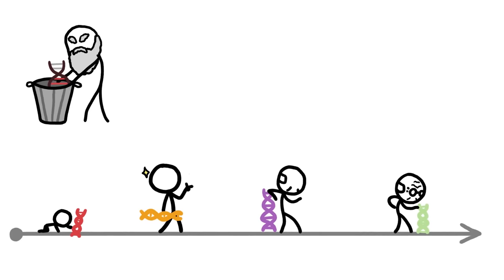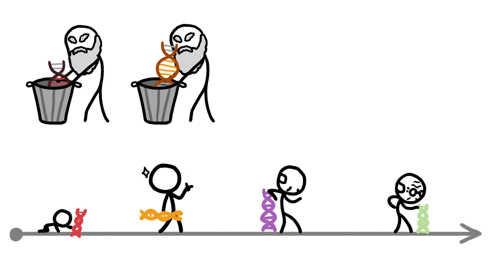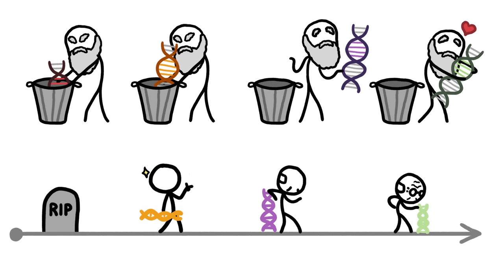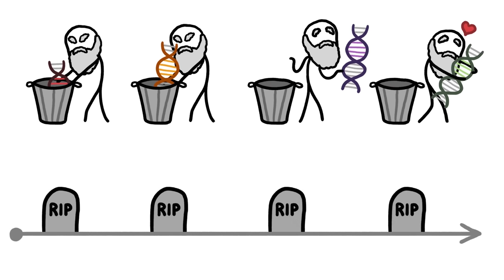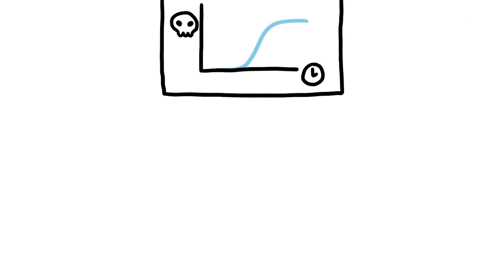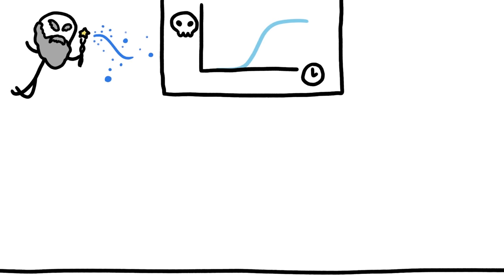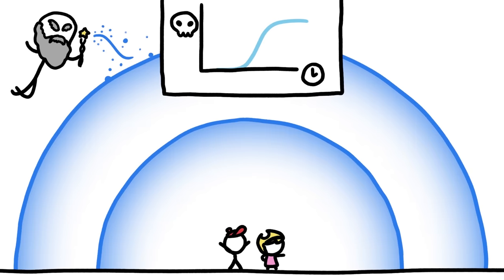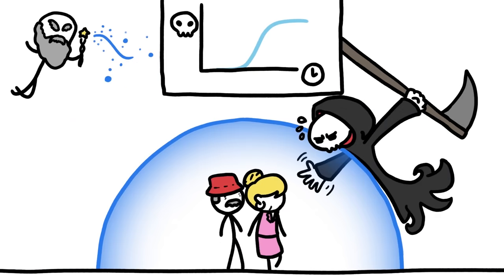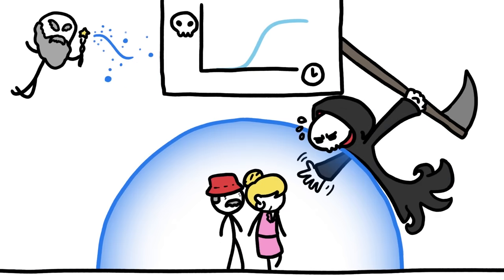In short, natural selection's ability to eliminate harmful genes gets lower and lower as the age at which those genes strike gets higher and higher. And this could explain the weird death rate curve. Like, think of natural selection as a magical force field that protects people from the grim reaper. But it gets weaker as people get older, so their odds of dying go up.